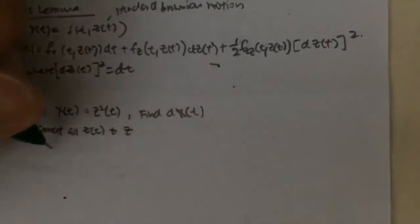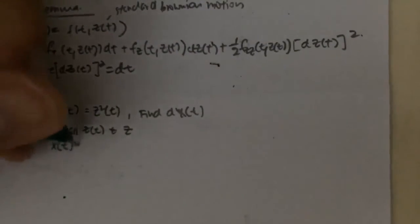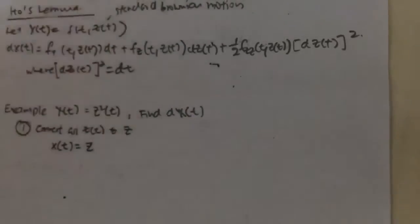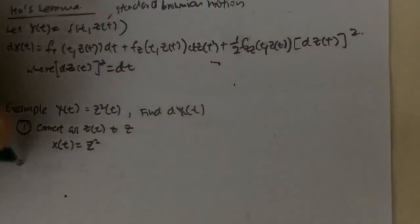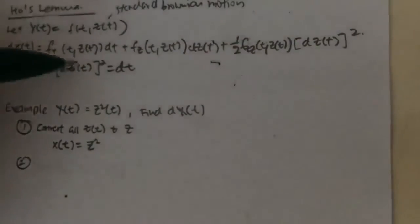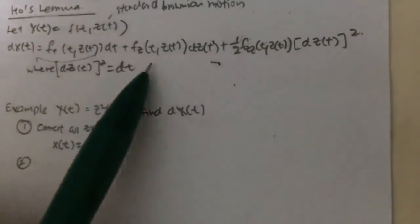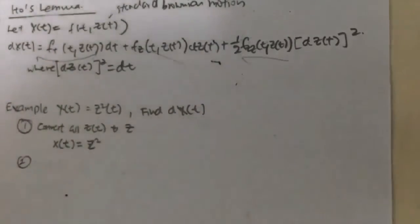So in this case, my X(t) is equal to Z squared. We convert all the Z(t) into Z squared. Next thing that we need to do is to find what is my F_t, my F_z, and my F_zz.